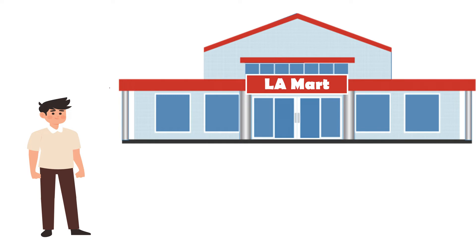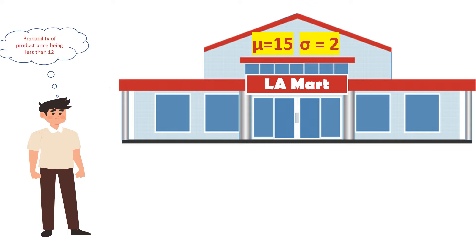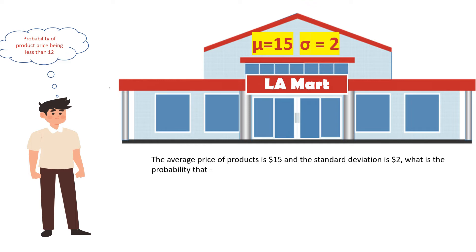Let's have an example. You are going to shop in a particular mart. While entering, you notice that the average price of the products is $15, and you have $15 to spend. You also notice that the average price is $15 with a standard deviation of 2. As a statistician, you start thinking: what is the probability of a product price being less than $12? The question becomes: given mean = 15 and standard deviation = 2, what is the probability that the price is less than $12?